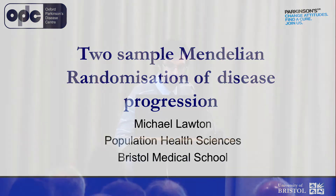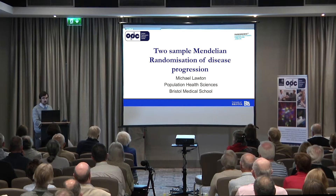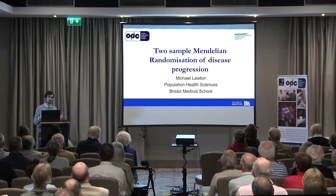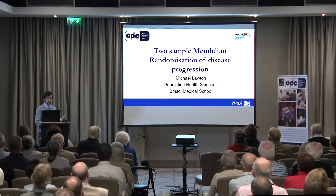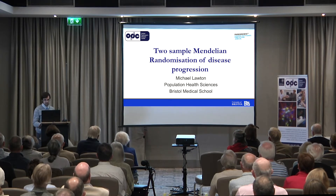I'm Michael Lawton. I'm a medical statistician based at the University of Bristol. I've been working on the Discovery cohort since 2013, and I'm going to speak to you today about a really new and modern statistical technique that we're using to look at disease progression, which is called two-sample Mendelian randomisation.